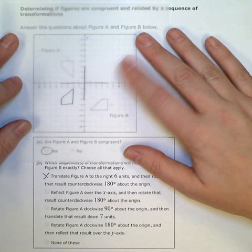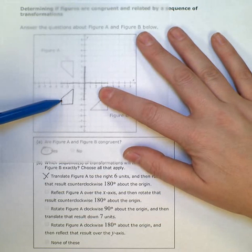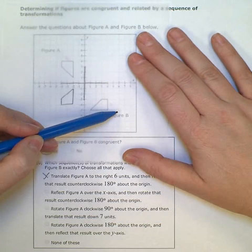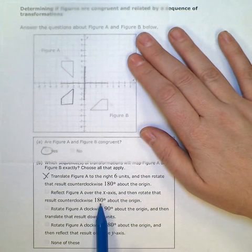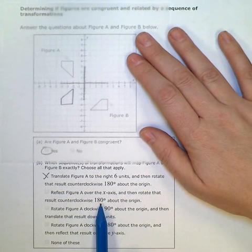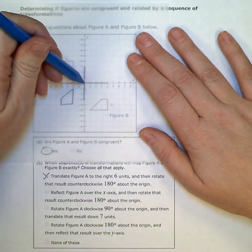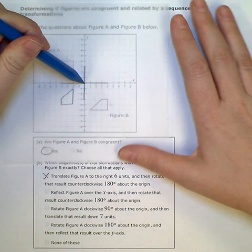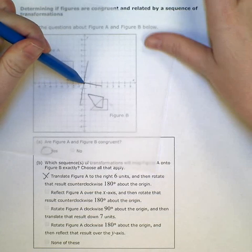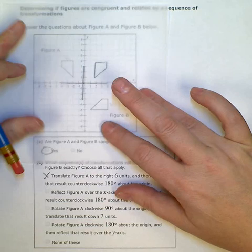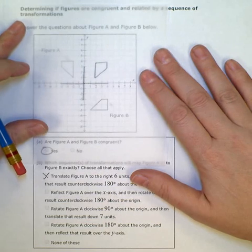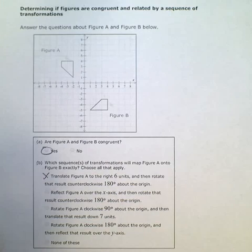That puts my figure right here. Still not over here. That's where I need to go. But now we're going to rotate that result counterclockwise 180 degrees. So now taking this, if I rotate it, one quadrant, two quadrants. That would put me up here. Not down here where I need to be. That one's out.